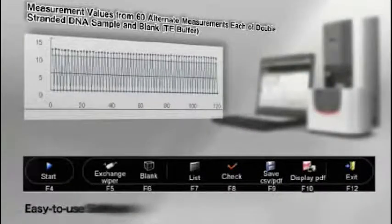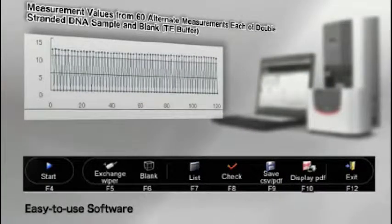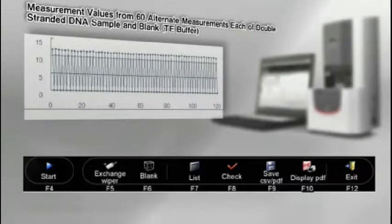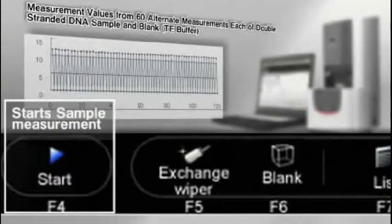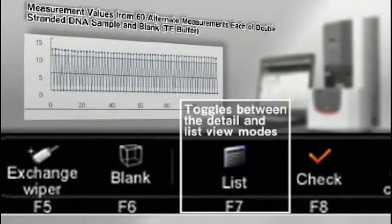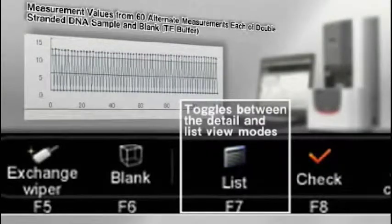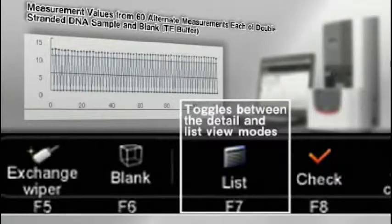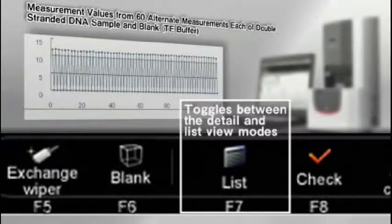Basic operations can be conveniently performed by clicking icons in the software or function keys on the instrument itself. Detail displays the analysis results and spectrum of the sample currently selected. List displays the analysis results of all samples in a table format.